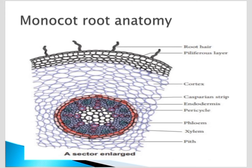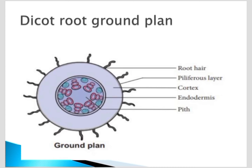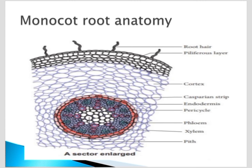Next to that, pericycle is present. Inside you can see phloem and xylem in radial order — that is at different radii. Many-layered xylem we can see, and phloem is present, but cambium is absent because secondary growth is absent. At the center we call it the pith region or medulla region. This is what we see in the monocot root anatomy.